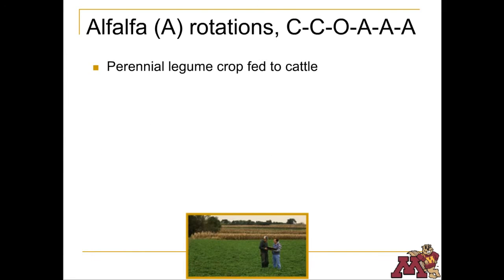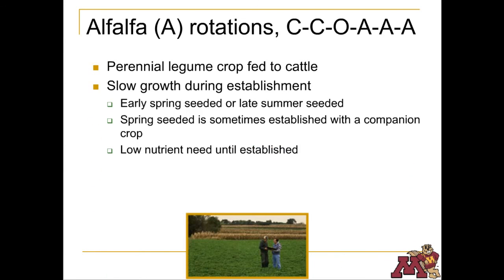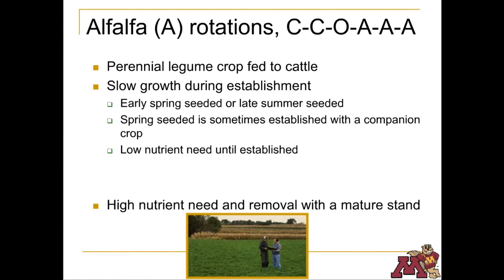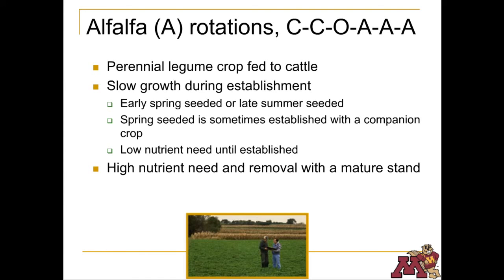Alfalfa is a perennial legume that can be grown in a rotation with corn and oats. One of the primary feeds for dairy cattle, the alfalfa crop grows for three or four years without replanting. It's generally planted in early spring or late summer with a companion crop such as oats. Because alfalfa is a legume, there is no need to add nitrogen.